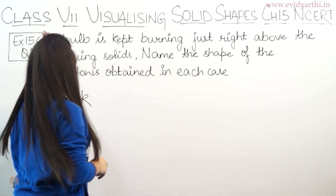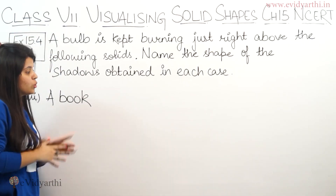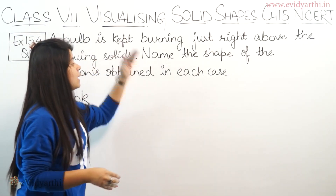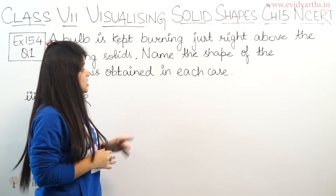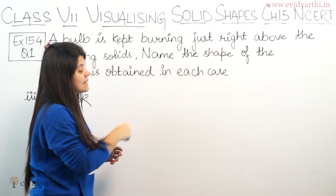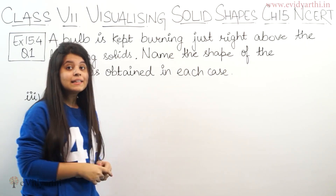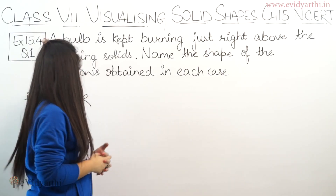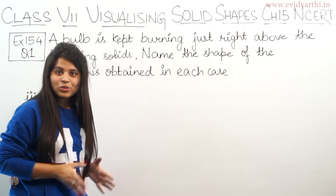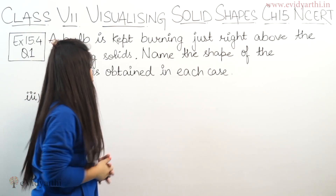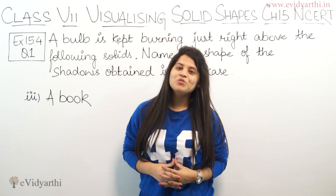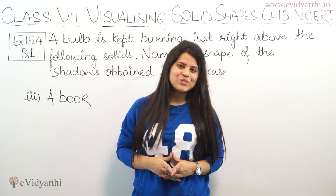The third part is a book. Here is a book, and now if I put a bulb over this, we can clearly see it is in a rectangle shape. So the shadow of a book will be a rectangular shape. This was question number 1 of exercise 15.4. Now let's come to the next question.